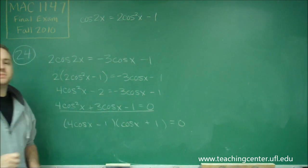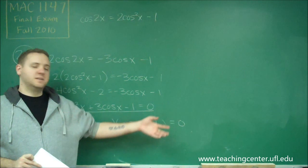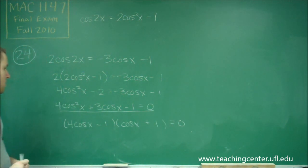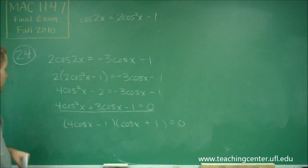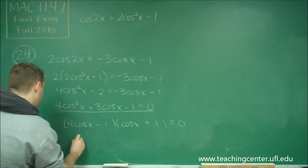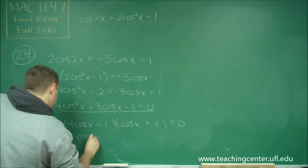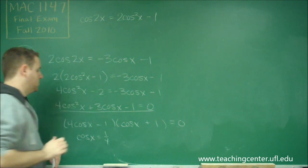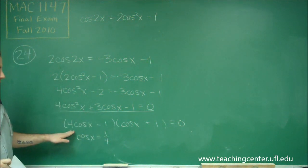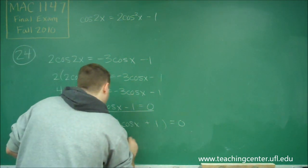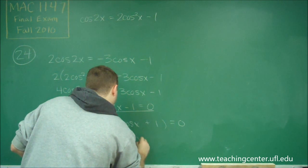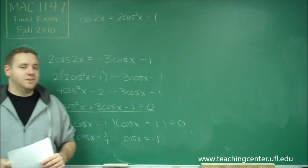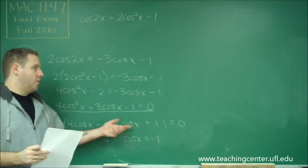We have two terms multiplied together to get 0, so each term could be 0, giving us two solutions for cosine of x. We have either cosine of x equals 1/4 from this factor, or cosine of x equals negative 1 from the right factor.